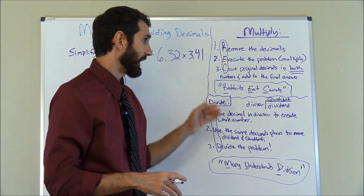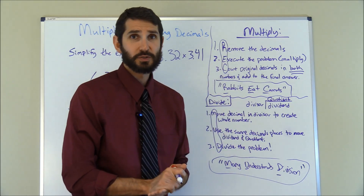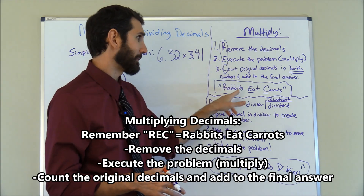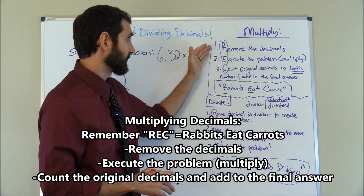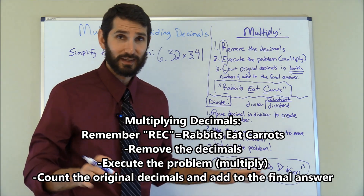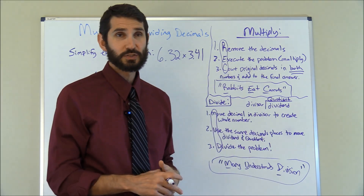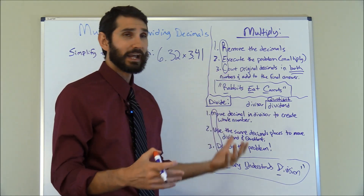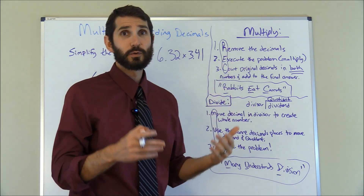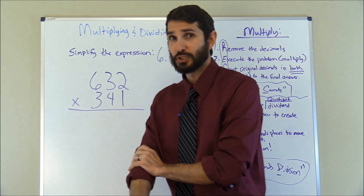There are a couple of quick mnemonics I've created for both multiplication and division because they are slightly different. For multiplication, the mnemonic is REC — R-E-C — and you can remember that by the phrase 'rabbits eat carrots.' First, you wanna remove the decimals because they make it look complicated. Then you execute the problem by multiplying it out like an ordinary multiplication problem. Finally, C stands for count the original decimal places in both numbers, add them together, and place that decimal back into your answer.